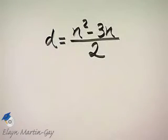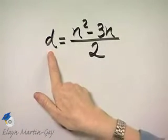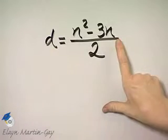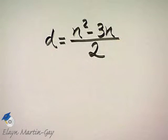The number of diagonals, D, that a polygon with N sides has is given by this formula.